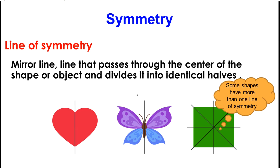Line of symmetry. Mirror line. Line that passes through the center of a shape or object and divides it into identical or same halves.